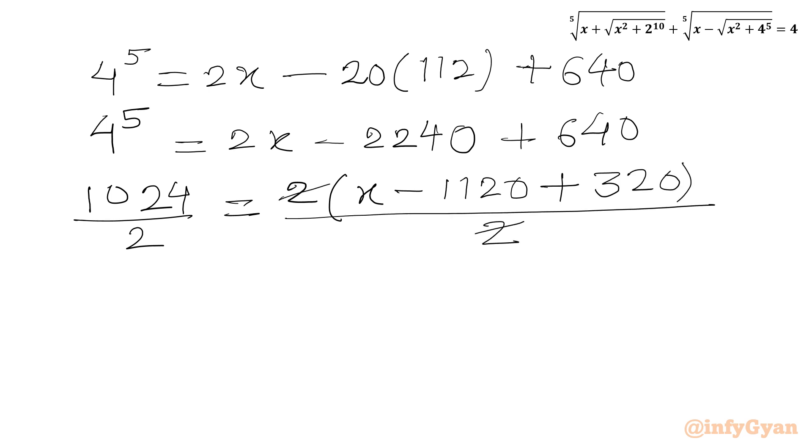So x minus 1120 plus 320 divided by 2. So we can cancel 2 and 2. Here we will be getting 512. So I can write 512 equal to x minus 1120 plus 320. So I can write further 512 will be equal to x minus 800.